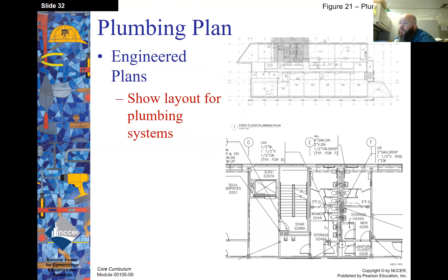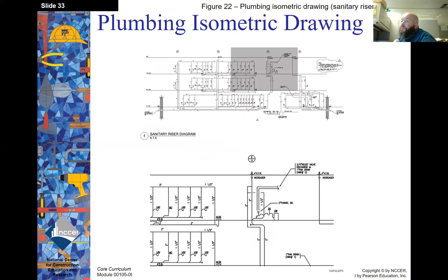The plumbing plan. These are engineered plans and they show the layout of the plumbing systems. Everything from where the sinks and toilets are placed to where any faucets or hose bibs are plumbed in. Plumbing isometric drawings.